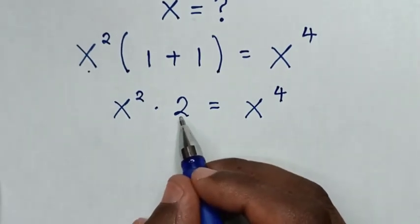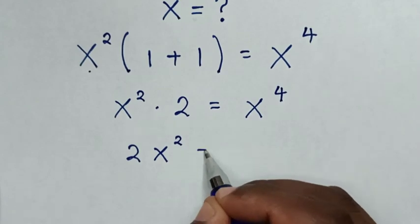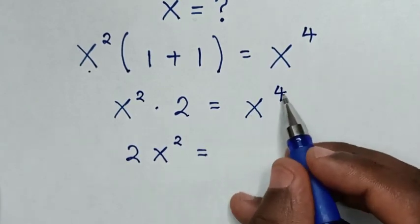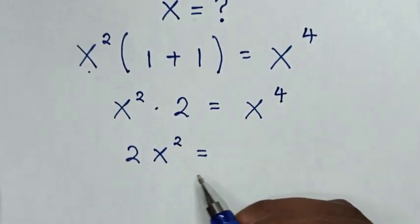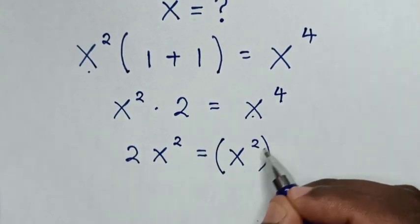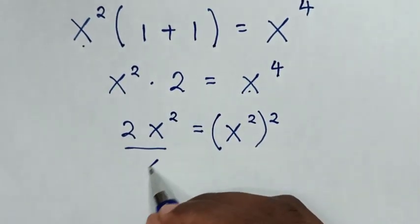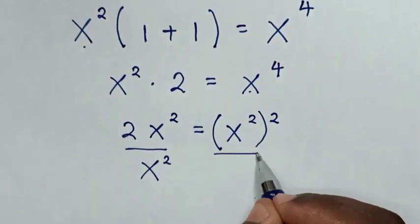Then in the next step, 2 times x² will be 2x² is equal to x⁴. To have common x², this is the same as (x²)². Then in the next step, we divide by x² on both sides.